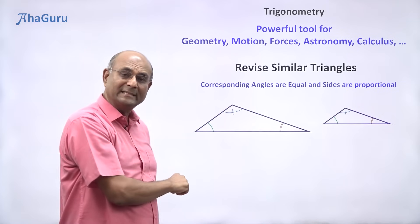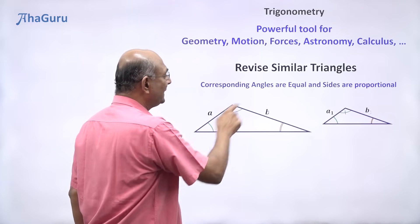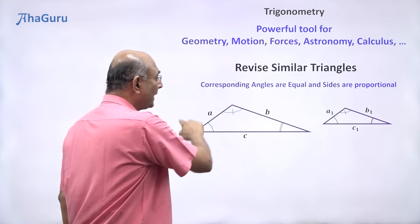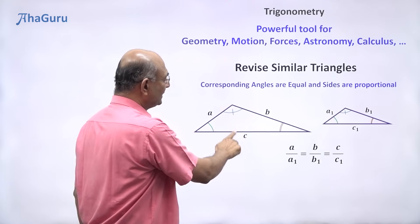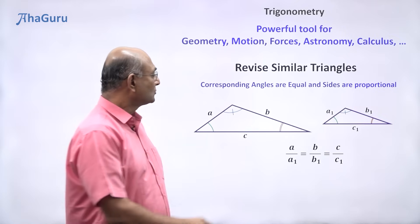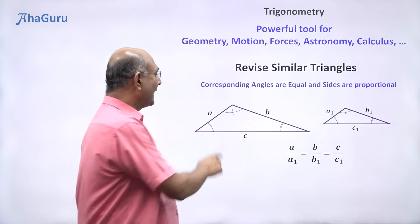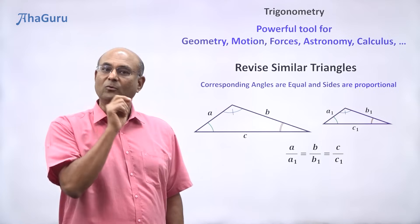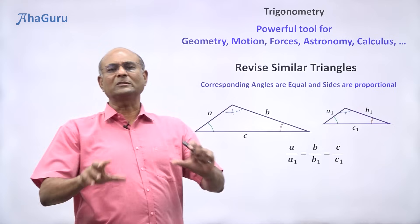Similarly, this angle must be equal to that angle and this angle must be equal to this angle. What does it mean that sides are proportional? If this is A and that is A1, B, B1, C, C1, then A/A1 = B/B1 = C/C1. So that means the sides are proportional and their corresponding angles are equal. This is true for any two similar triangles.